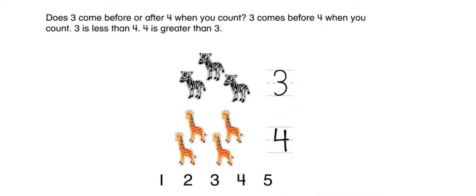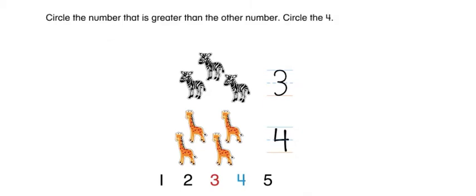Does three come before or after four when you count? Three comes before four when you count. Three is less than four. Four is greater than three. Circle the number that is greater than the other number — circle the four.